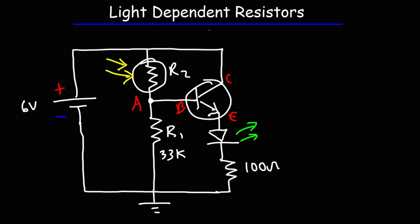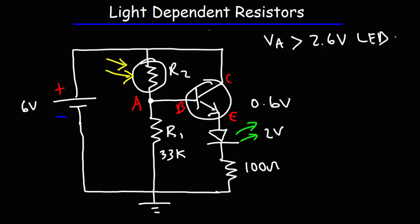The voltage drop between the base and the emitter is 0.6 volts, and the voltage drop of the green LED is 2 volts. So once again, if VA is greater than 2.6 volts, the transistor will be activated and the LED will be on. If VA is less than 2.6 volts, the transistor will be off — no current flows from collector to emitter and the LED will be in the off state.